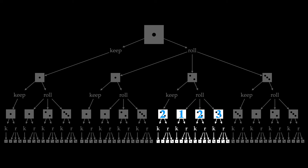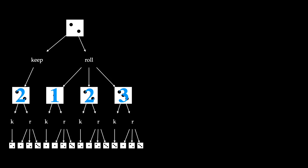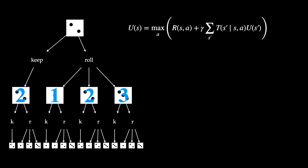Now getting back to our original goal: the utility of being in a state where 2 is showing with two turns left. With these sub-utilities computed, we take the max over actions. For the keep action, we get immediate reward of two plus gamma times the utility of the state we transition to — which is two, since we kept — giving us two plus gamma times two. For the roll action, the immediate reward is zero plus gamma times one-third, where one-third is the transition probability for each face of the three-sided die.